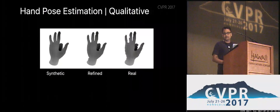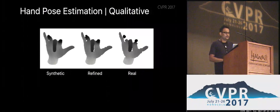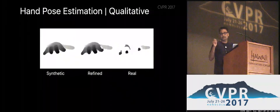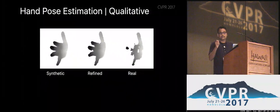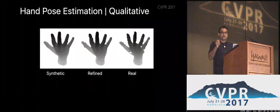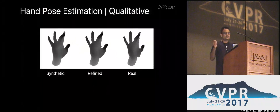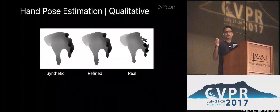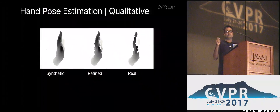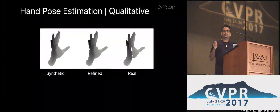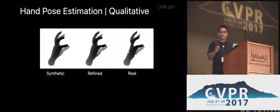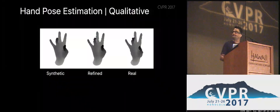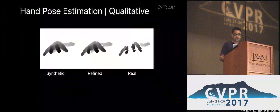Similar experiments for the hand pose estimation task using the NYU hand depth image dataset. On the left are synthetic images, on the right are real images. The edges are pretty noisy in the real dataset, and this noise distribution has been learned very well in the middle — the output from the refiner network.